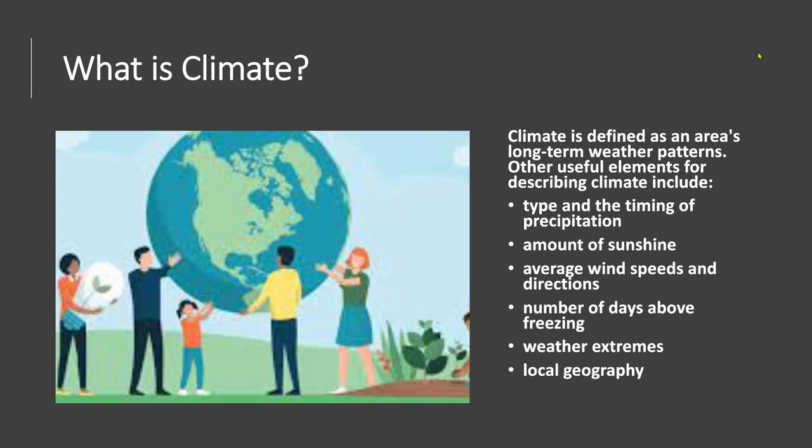First and foremost, what is climate? Generally, it is defined as an area's long-term weather patterns. The simplest way to describe climate is to look at the average temperature and precipitation over time. Other useful elements include the type and timing of precipitation, amount of sunshine, average wind speeds and directions, number of days above freezing, weather extremes and local geography.